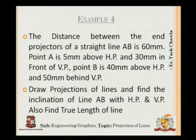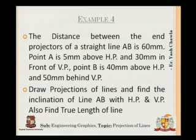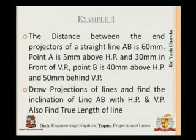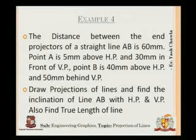This is a case different from what we discussed before. Let's read the problem: the distance between the end projectors of a straight line AB is 60 mm. Point A is 5 mm above HP and 30 mm in front of VP. Point B is 40 mm above HP and 50 mm behind VP. We have to draw the projection of the line and find the inclination of AB with HP and VP, and also find the true length.